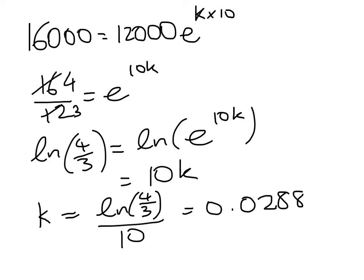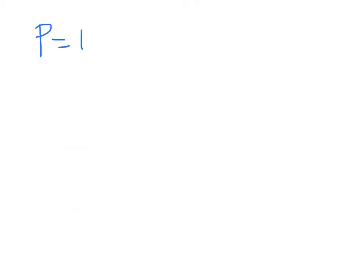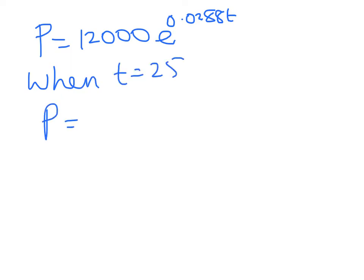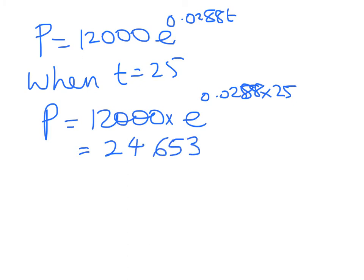So one more slide needed, because I have to figure out what's the population going to be in 2025. So now I can write my equation as P equals 12,000 E to the 0.0288 T, and I need to substitute 25 in there. So P is equal to 12,000 E to the 0.0288 T. When T equals 25, this gives me P is equal to 12,000 times E to the power of that, which works out to be 24,653.